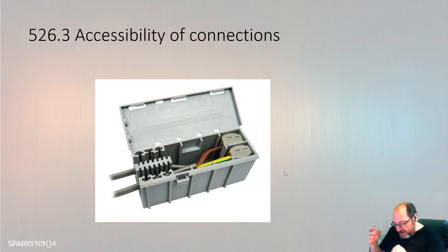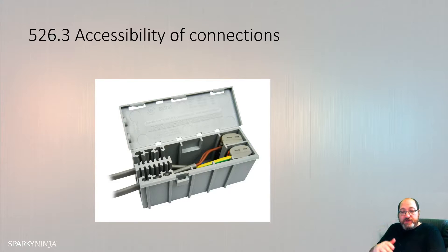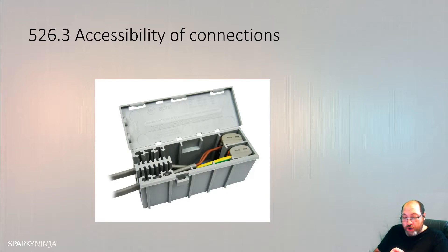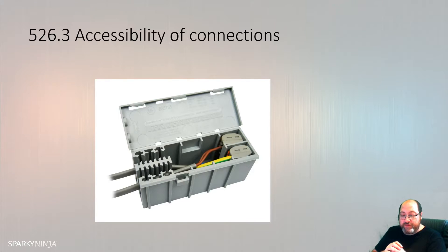526.3 tells us every connection will be accessible unless it's a joint designed to be buried in the ground, a compound-filled or encapsulated joint, a connection between the cold tail heating element, a joint made by welding, soldering, brazing, or appropriate compression — such as a crimper, which would be an appropriate compression method — or joints or connections made by the manufacturer of the product, such as simple push-fit contacts.